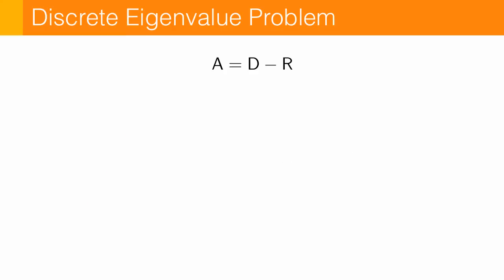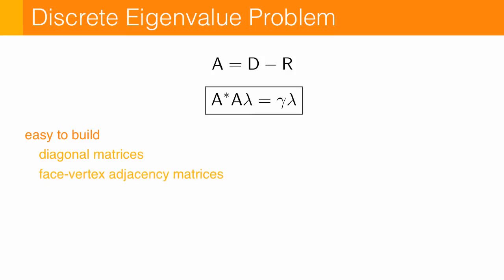Finally, we take the difference, this matrix A, and look for the smallest eigenvalue of A star A. But the point here is really just that the system is really easy to build. We have just some diagonal matrices and adjacency matrices. And as a result, we get a system with a really familiar structure, just a positive definite matrix, where each row depends only on the vertex one ring.